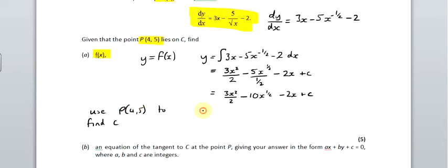So y is 5, so 5 equals 3, and x is 4, 4 squared over 2 minus 10 times 4 to the half minus 2 times 4 plus C. That gives me 5, and that is 24 minus 20, that's minus 8 plus C, and that gives you C equals 9.